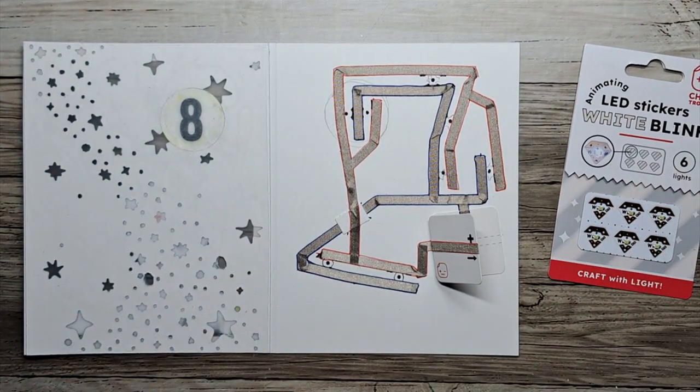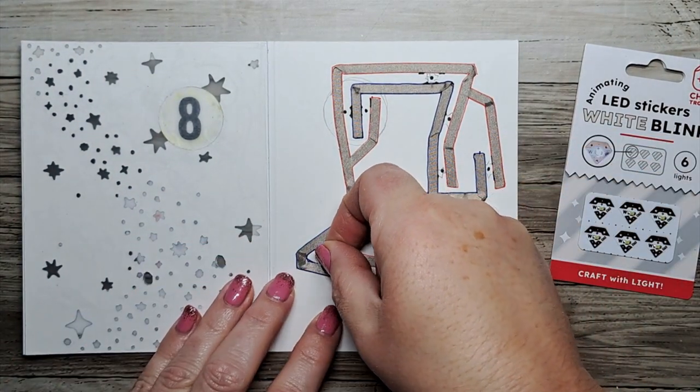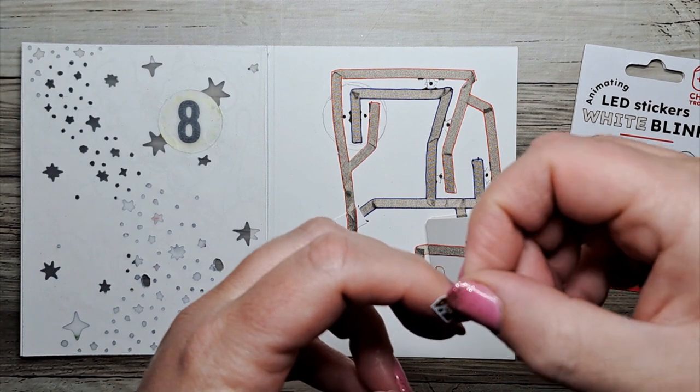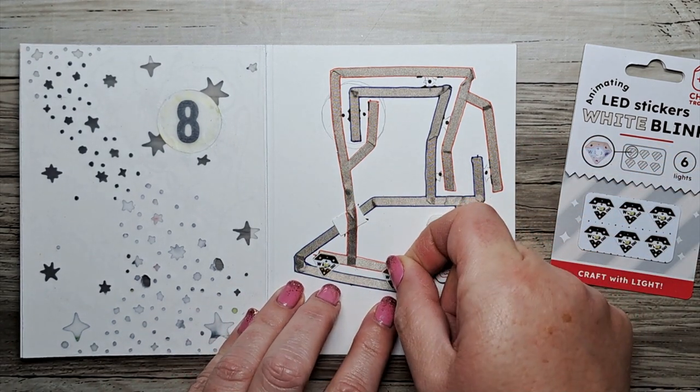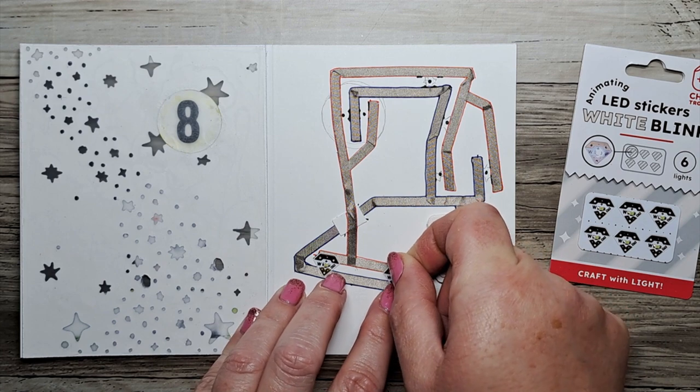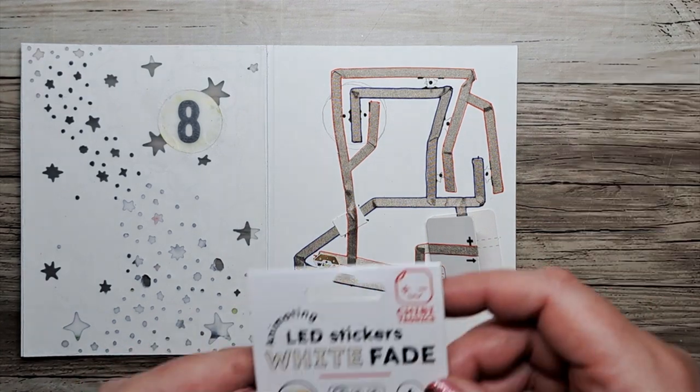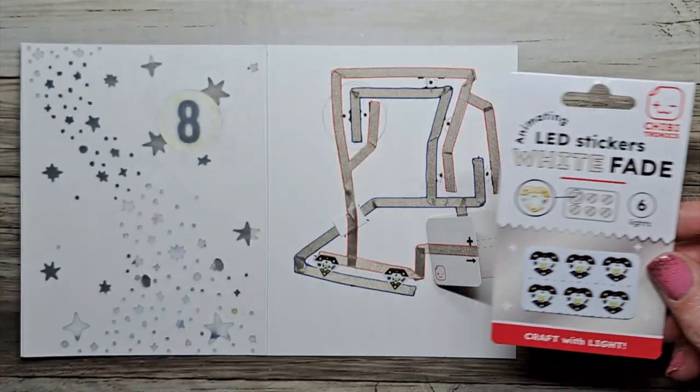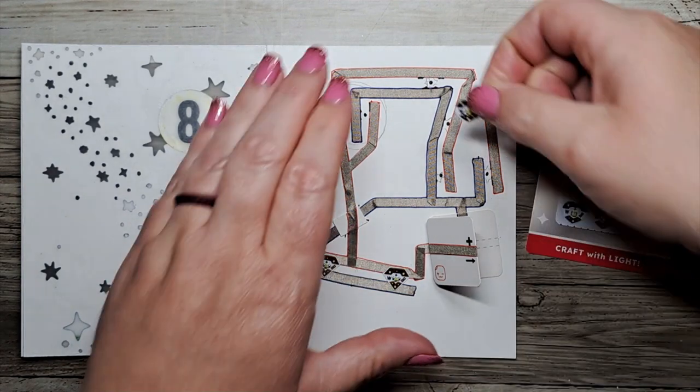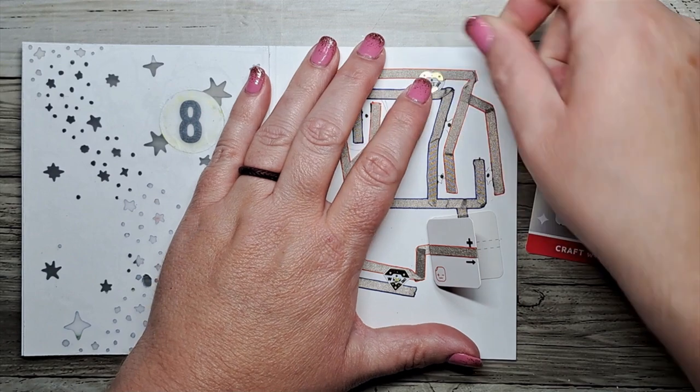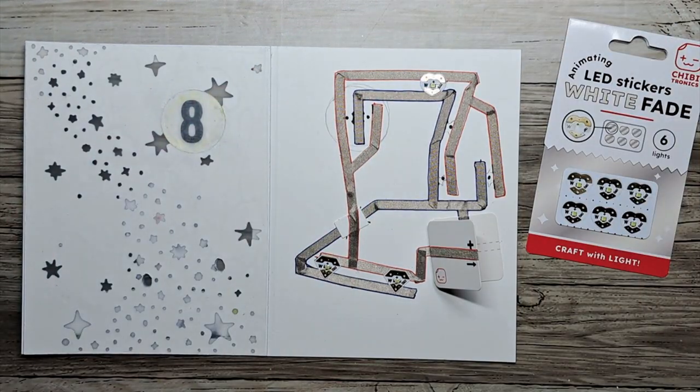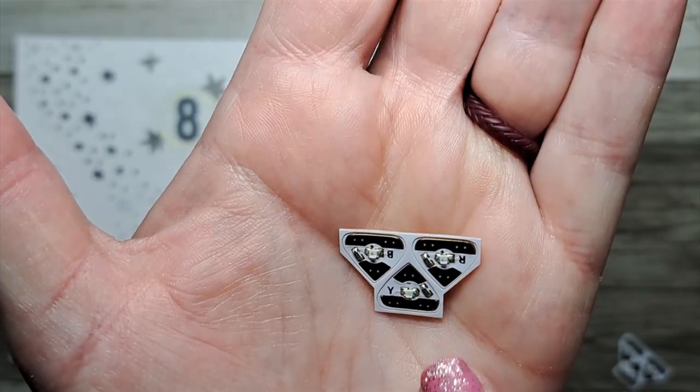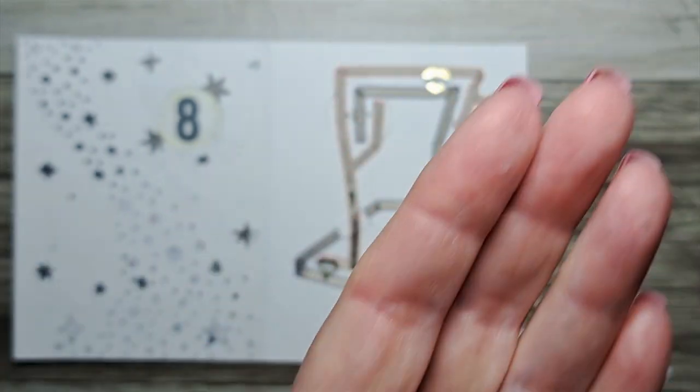All right let's apply our LED white blink stickers. They are gem shaped and it's just a peel and stick. Now make sure that the negative parts of this sticker go to the negative side of the circuit and on each sticker it is indicated which side is the negative and which side is the positive. Let's put on some white fade LED stickers. These are animating stickers which means they do a task. They don't just turn on and off, they actually create a blink or a fade or a twinkle, that kind of thing. Now I have just placed that last sticker on incorrectly. We will fix it.